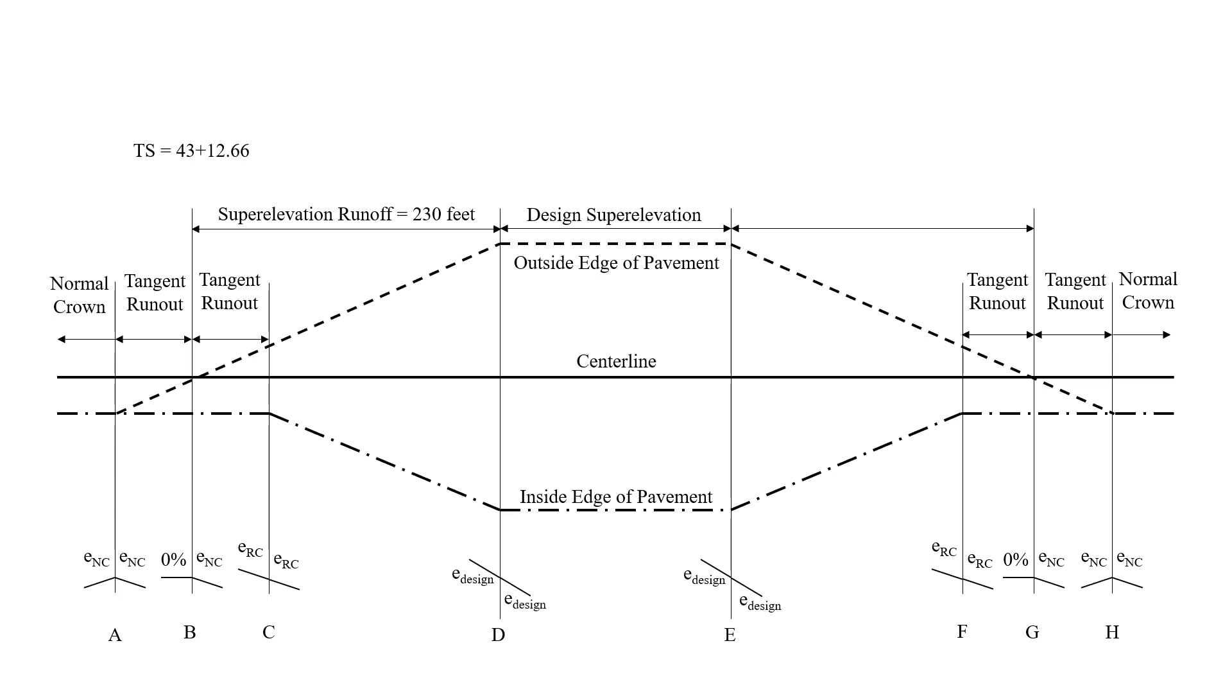We have a superelevation runoff of 230 feet, that's the length of our spiral transition. Next, we have our spiral to curve points. We're adding that 230 feet to our TS to get the SC station of 45 plus 42.66.